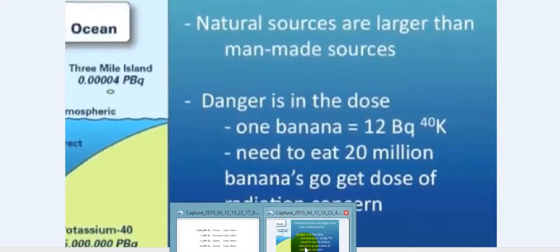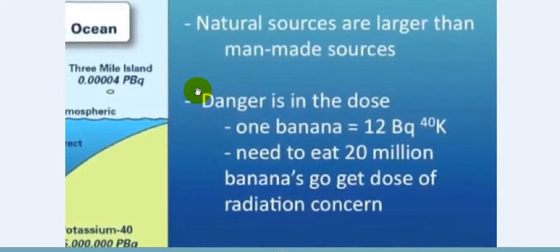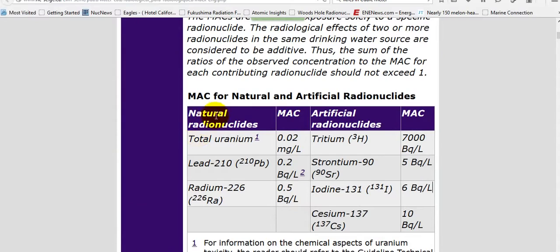And that's why you see the artificial radionuclides now included. They never bother telling you about it or trying to do something about it. The role of people like Ken Buesler, who says the danger is in the dose. One banana is 12 becquerels of potassium-40. You need to eat 20 million bananas, that's 5 million pounds, four bananas to the pound, before you can get a dose of radiation concern. So they just mock you.